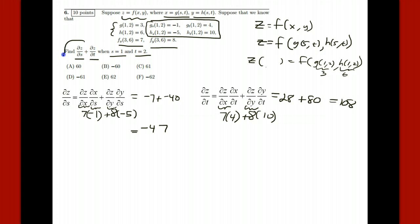In the end, they want us to add these together. So partial of z with respect to s plus partial of z with respect to t is negative 47 plus 108. I think that's a 61.